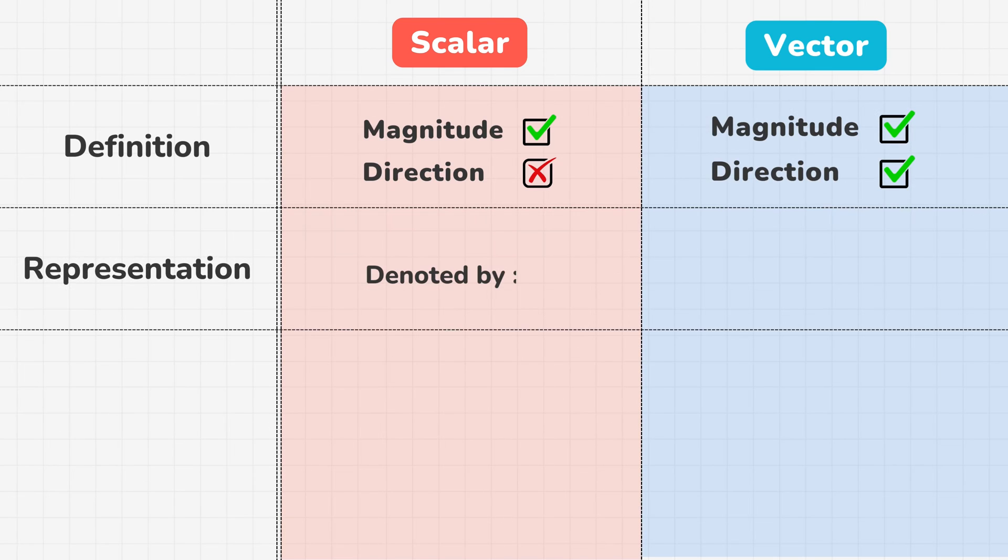Scalars are represented by ordinary letters, while vectors are represented by bold letters or letters with arrows on top.